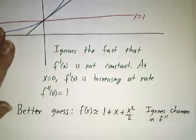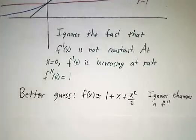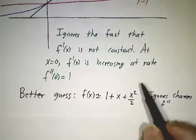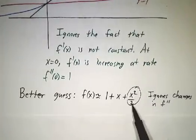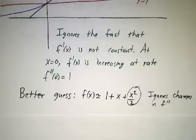So you might try a still better guess. You add this extra term that makes the second derivative equal to 1. Except now, the second derivative of this expression is always 1. This ignores the fact that the second derivative can change.